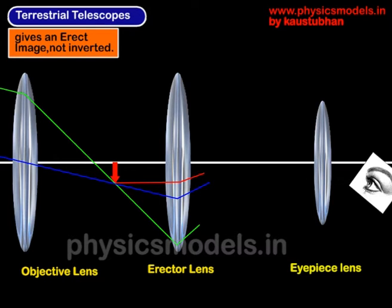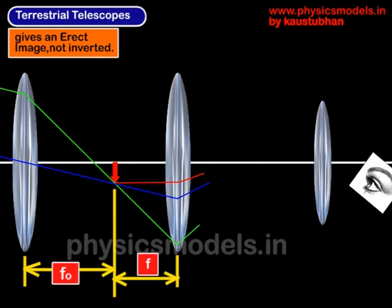This arrow becomes the object for the second lens, which will form a secondary image later on. Now, a word about the focal lengths. The objective lens, the first one, has a long focal length shown as F-O. The second lens, called the erector lens, has a short focal length shown as F. And the third lens, which is the eyepiece lens, will have the shortest focal length, shown as F-E.